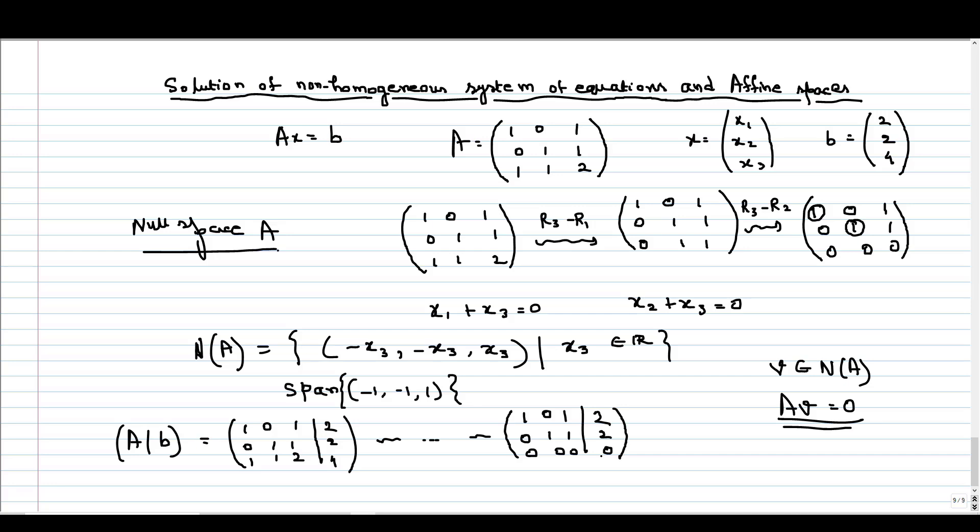At the end we will get this reduced system form. And from here, we can find that x1 plus x3 equals 2, and x2 plus x3 again equals 2. x3 is our independent variable. So the solution set is 2 minus x3, 2 minus x3, x3.